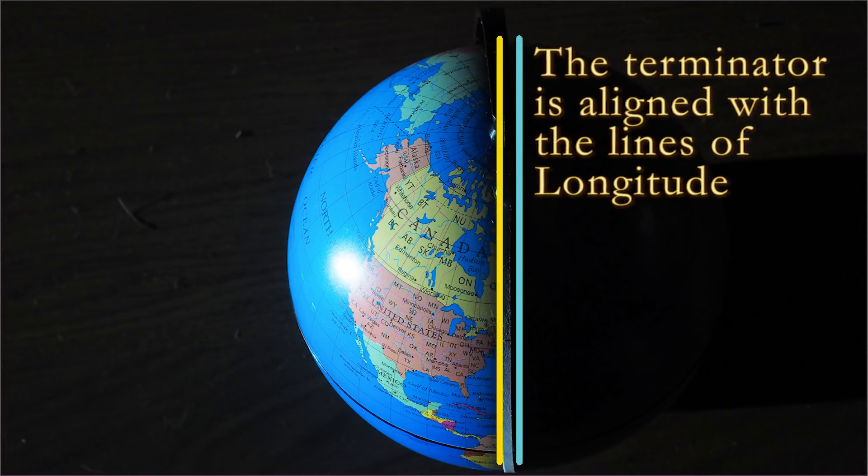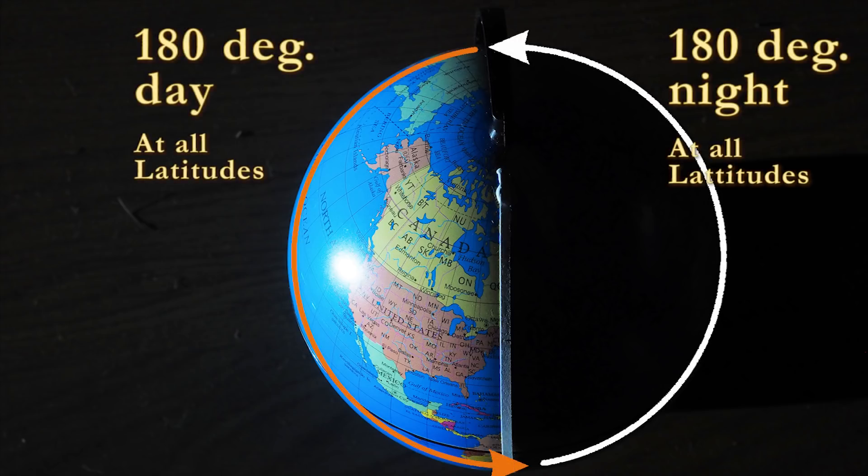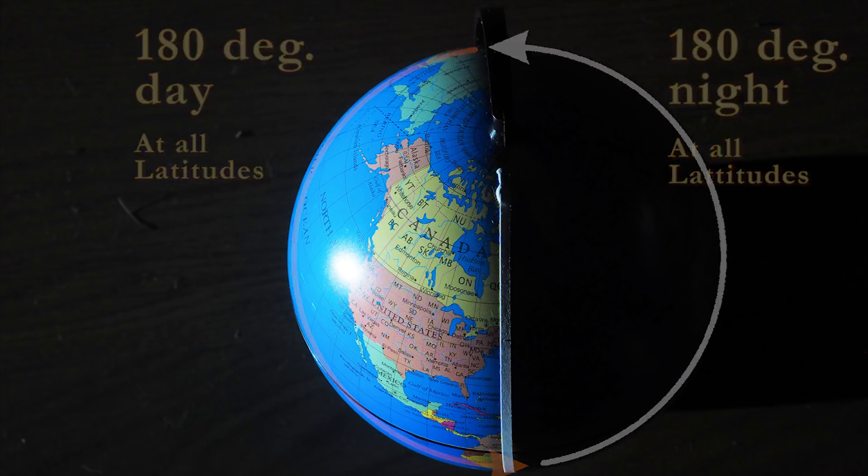If the terminator line and the lines of longitude are both at 90 degrees to the sun, then the sun rises at the same time for all latitudes outside of the poles and also sets at the same time at all latitudes. In one revolution, we get 180 degrees of daylight and 180 degrees of night time.